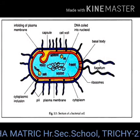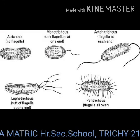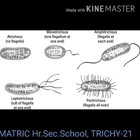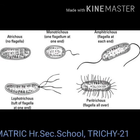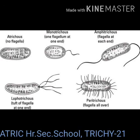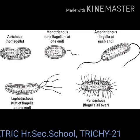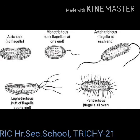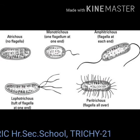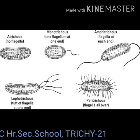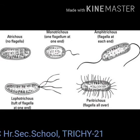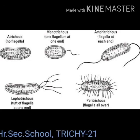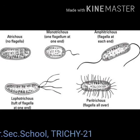Pili or fimbriae are hair-like appendages found on the surface of the cell wall of gram-negative bacteria. In addition to normal pili, there are special types of pili which help in conjugation, called sex pili, which are also found in these bacteria.